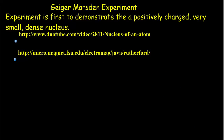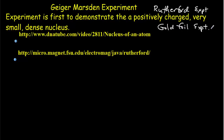The experiment that really demonstrated that the atom has a positively charged, very small, very dense nucleus is called the Geiger-Marsden Experiment — or the Rutherford Experiment, or perhaps the Gold Foil Experiment. Geiger and Marsden were part of Rutherford's research team as postdoc students, and they were the ones who actually conducted the experiment.